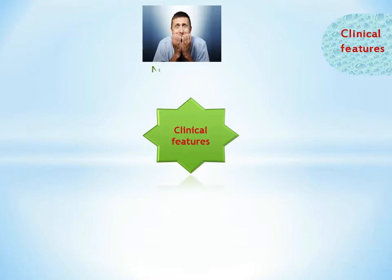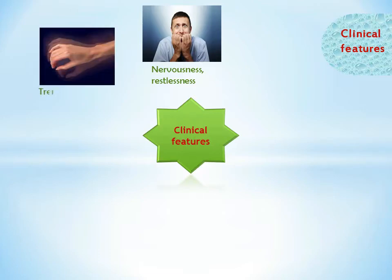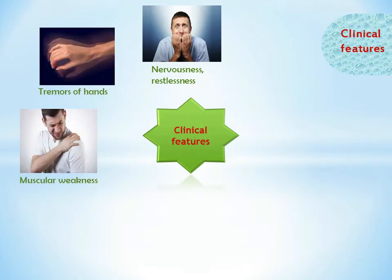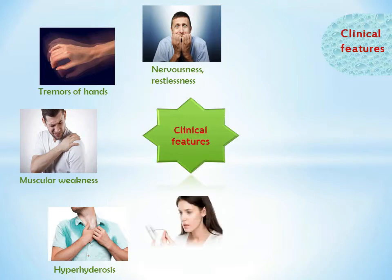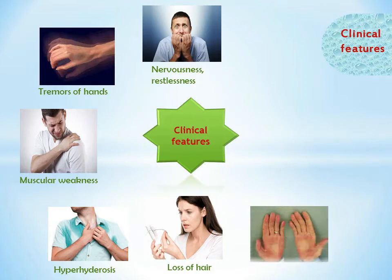Neuromuscular symptoms include nervousness and irritability, restlessness, psychosis, tremors of hands, and muscular weakness mostly proximal. Dermatological symptoms include perspiration with increased sweating or hyperhidrosis, loss of hairs, pretibial myxedema, and redness of palms.